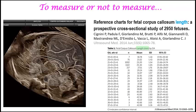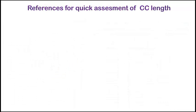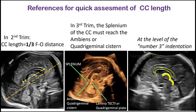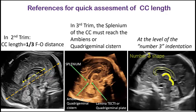If you are using conventional 2D ultrasound, I would suggest using the chart of Signorini and colleagues, due to the large number of cases included, especially between 21 and 23 weeks. In daily practice, some tips can be useful for a quick assessment of corpus callosum length: in the second trimester it should be around one third of the occipitofrontal distance. In the third trimester, the splenium of the corpus callosum must reach the ambient or quadrigeminal cistern at the level of the lamina tecti, verifying that it reaches the indentation of the number 3 shape formed by the fornix and lamina tecti.